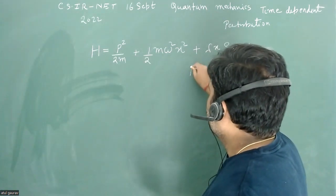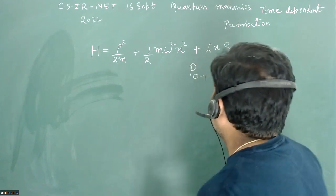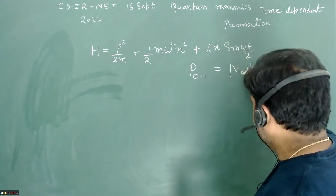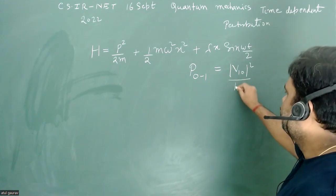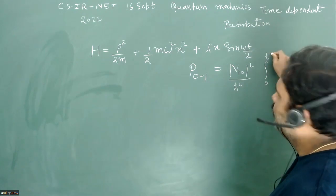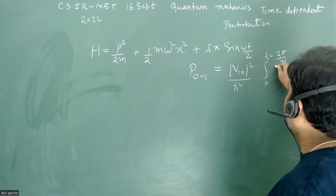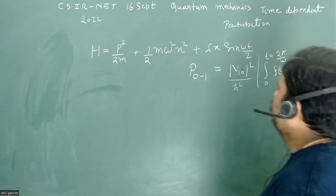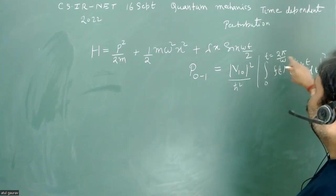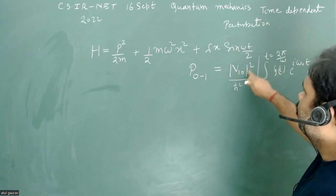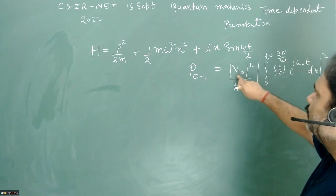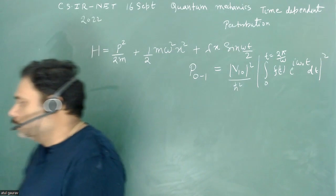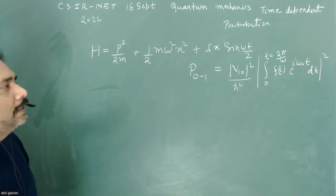The transition probability from state 0 to state 1 is given by |V₁₀|² divided by ℏ², multiplied by the modulus squared of the integral from 0 to t of F(t) times e^(iω₀t) dt, where t equals 2π/ω. We need to calculate ω₀, and F(t) is sin(ωt). We also need to calculate the spatial part of the matrix element.